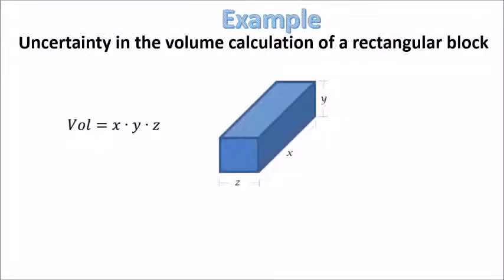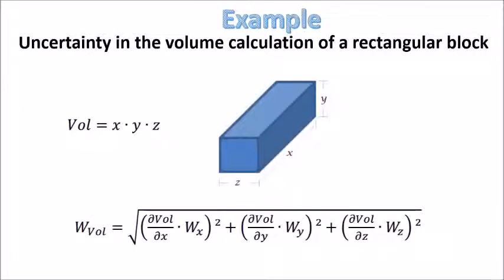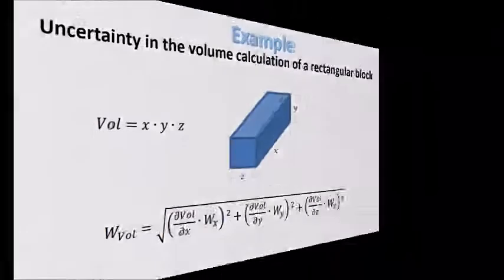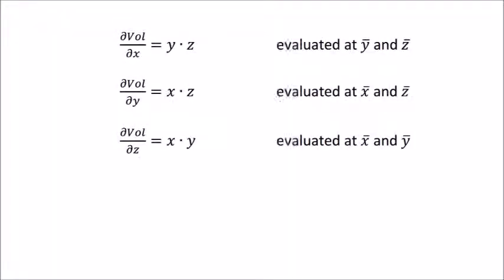The maximum uncertainty is given by the following formula. Each derivative is computed as follows. The final formula, plugging in the derivatives, will look something like this.